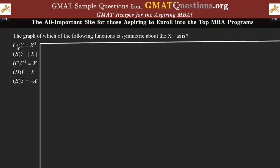In choice A, you should recognize a quadratic equation — basically it's the equation of a parabola. And y equals absolute value of x, you should recognize as basically two different lines. In order to solve the question, instead of doing it algebraically, I'm going to use coordinate geometry — I'm going to actually draw.